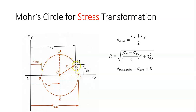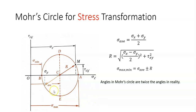At any point on the perimeter of the circle, the distance from the vertical axis gives the normal stress in the x-direction, and the distance from the horizontal axis gives the shear stress. The other end of the diameter gives the normal stress in the y-direction. Notice that all the angles in Mohr's circle are twice the angles in reality — so 180 degrees in Mohr's circle corresponds to 90 degrees in reality. Always note that angles in the circle are twice the angles in reality.